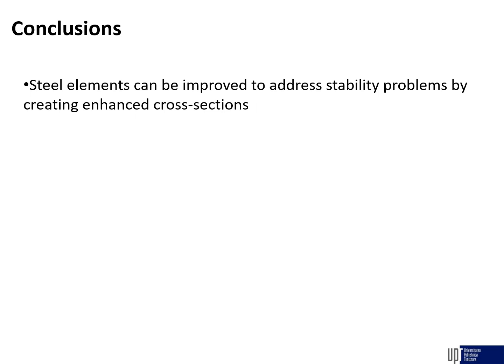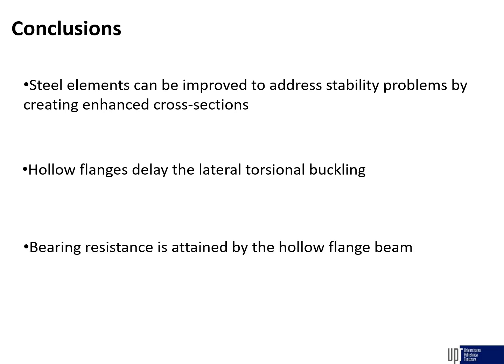The study showed that steel elements can be improved to address stability problems by creating enhanced cross sections. Hollow flanges delayed the lateral torsional buckling of steel beams, and bearing resistance is attained by the hollow flange beam.